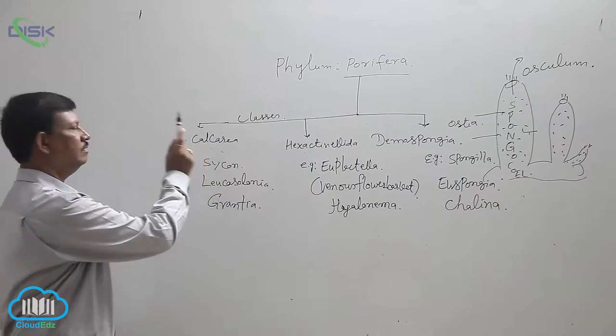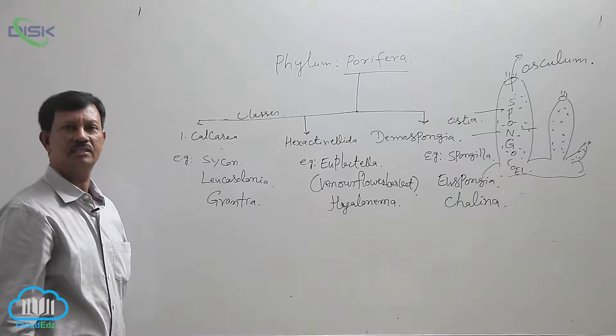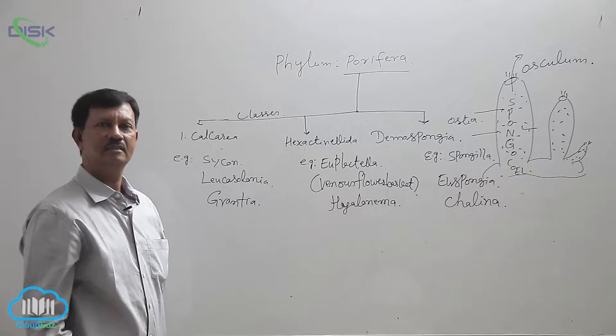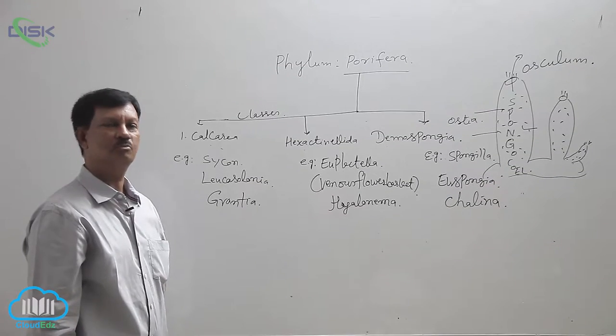Calcarea are found in marine water. They are simple organisms, and both sessile and colonial forms are found here.